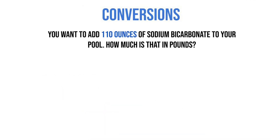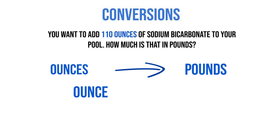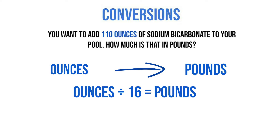Now we're going to go over how to convert ounces to pounds. This is an amount conversion. The first thing we want to do is write our conversion on the screen: ounces divided by 16 gives us pounds.